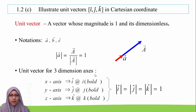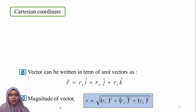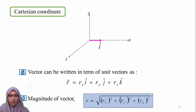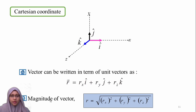Unit vectors for 3 dimensions exist. The X-axis is represented by I-hat, the Y-axis by J-hat, and the Z-axis by K-hat. A vector can be expressed in Cartesian form consisting of X, Y, and Z axes. The magnitude of this vector is calculated using the standard formula: the square root of the sum of the squares of its components.